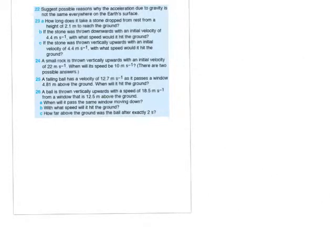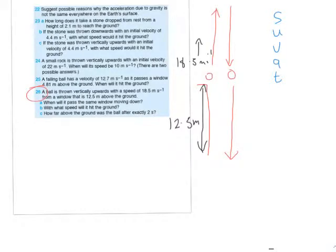So now we're going to try question 26. A ball is thrown vertically upwards with a speed of 18.5 from a window that is 12.5 meters above the ground. So let me sketch that out. So there are three stages, in fact, to this question, but it depends on what we need to look for. For example, it rises, reaches its maximum point, drops to the same position, and then reaches the floor.